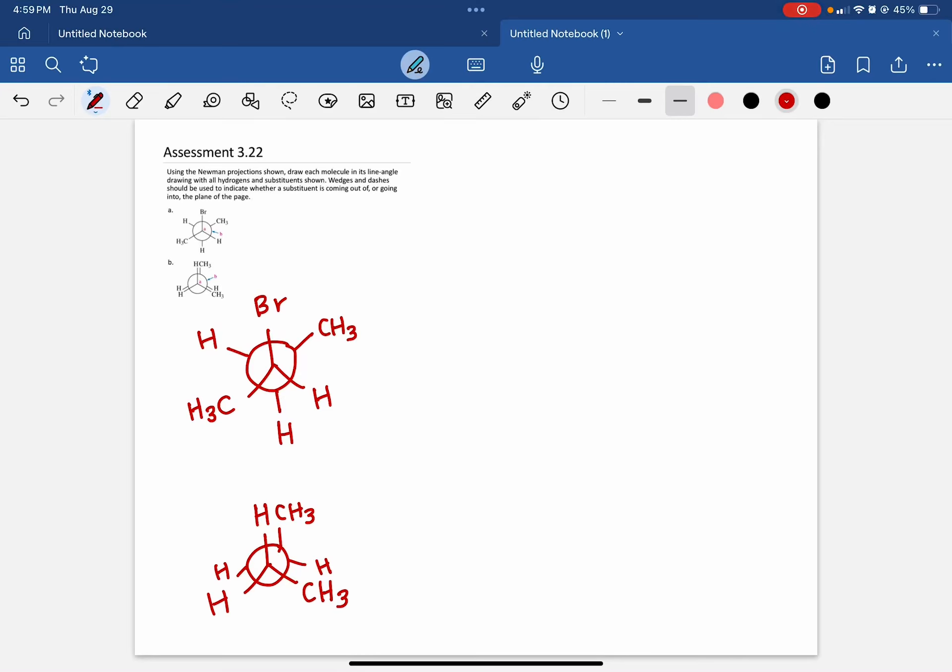Assessment 3.22 has us using Newman projections for the first time. In this drawing, what they have labeled as letter A is the front carbon and what they have labeled as letter B is the back carbon for both of these structures.